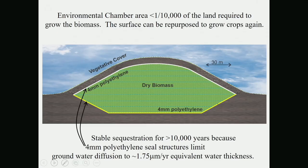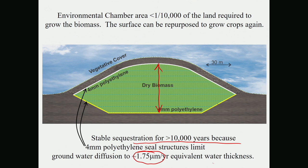If you dry it enough and seal it with polyethylene, it will last for 10,000 years, largely because the polyethylene keeps out the water. Polyethylene allows two microns equivalent thickness of water through per year. The dry biomass in such a landfill would be about 100 feet thick — so with two microns of water getting through per year, it will last for 10,000 years. The landfill would be roughly a couple hundred yards by a couple hundred yards, with a thickness of about 20-30 meters.